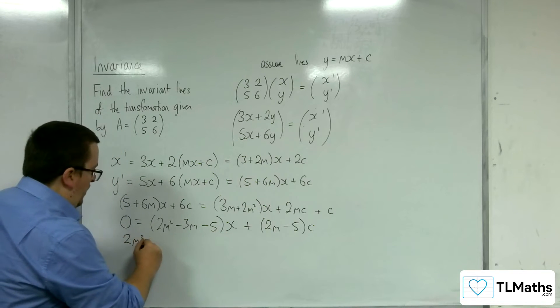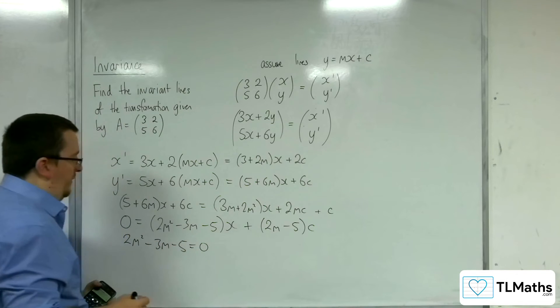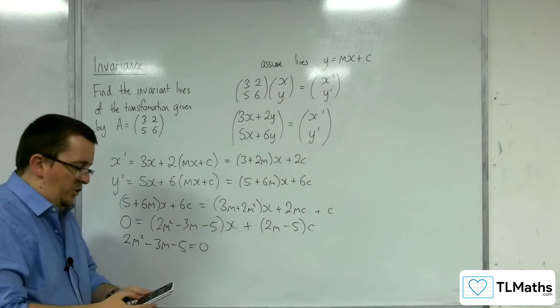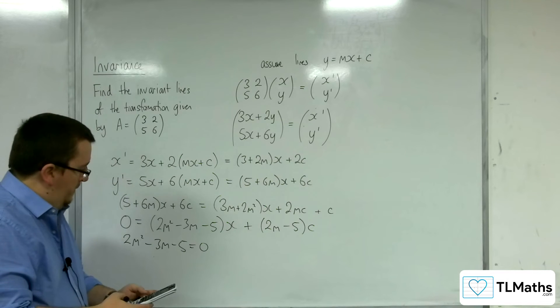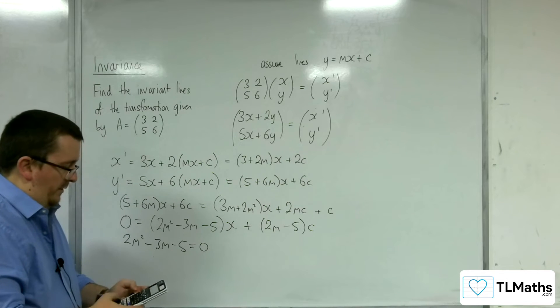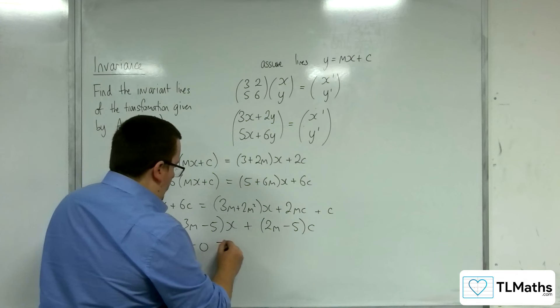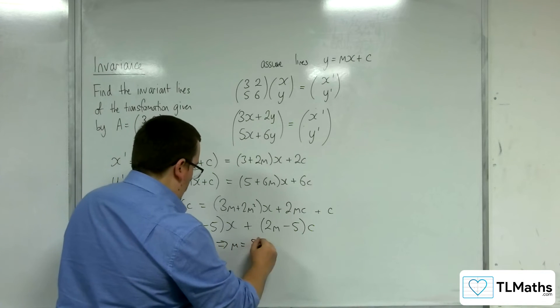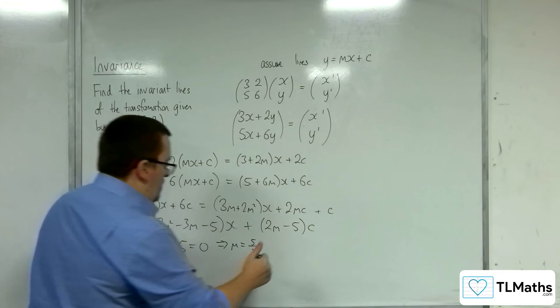So 2m squared minus 3m minus 5 has got to be 0. So if we plug that into our quadratic solver, 2 minus 3 minus 5, we get that m would have to be 5 halves or minus 1.